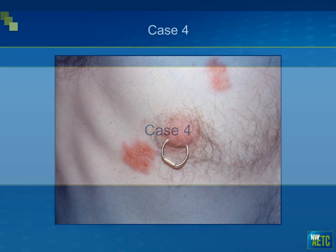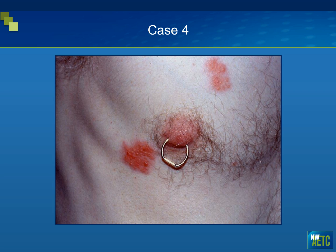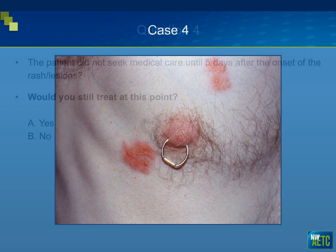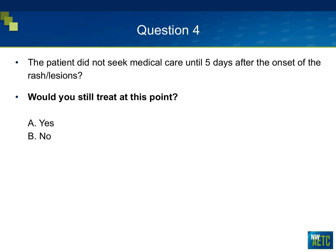Now let me move on to case four. This individual presented with about a six- to seven-day history of vesicular lesions with an erythematous base on his chest. He originally thought these were from moving furniture, but these were indeed suspicious for herpes zoster. He had lesions on his back as well. The patient didn't seek medical care until more than five days after onset. The question is: would you still treat this individual considering the lesions had been there for more than five days?